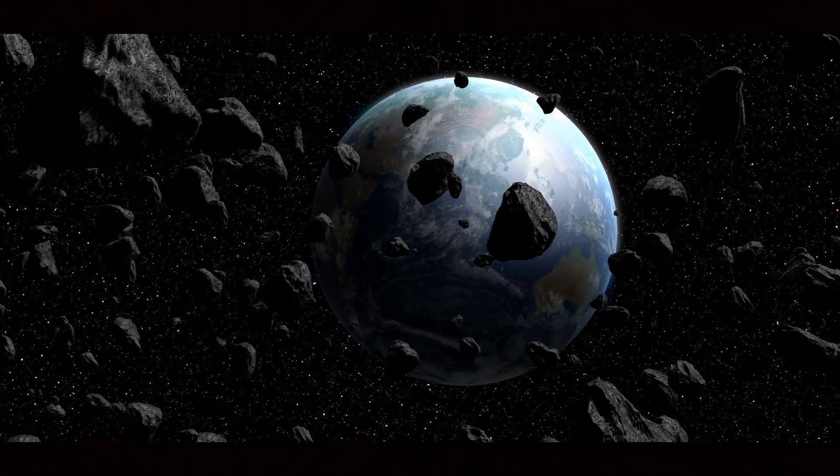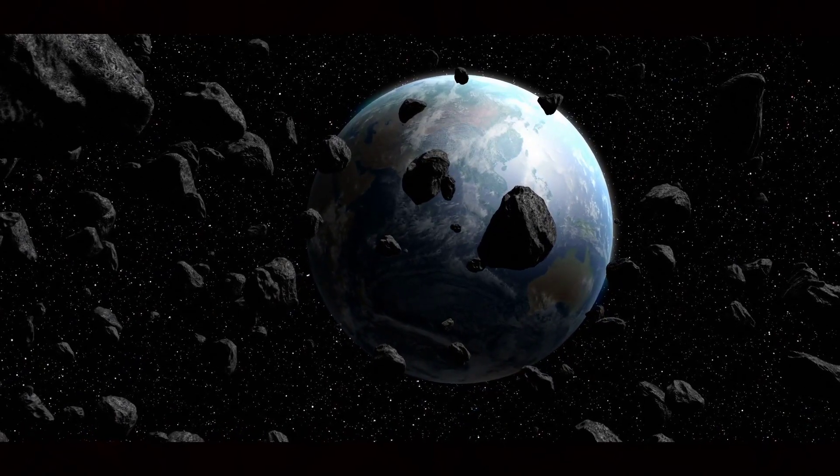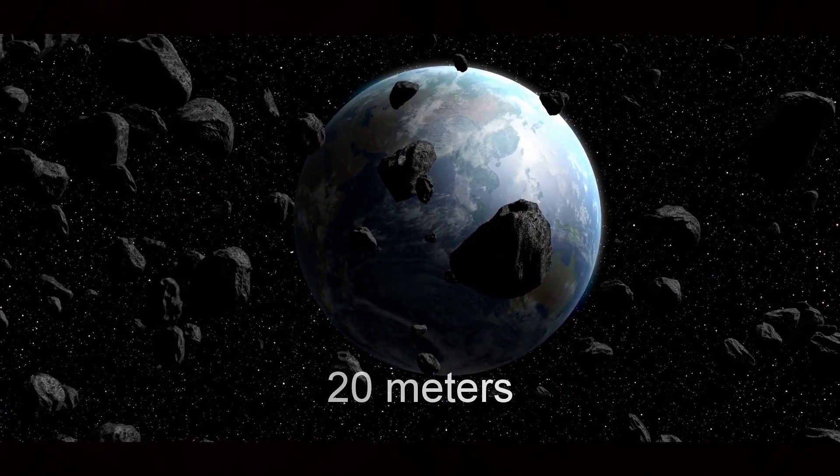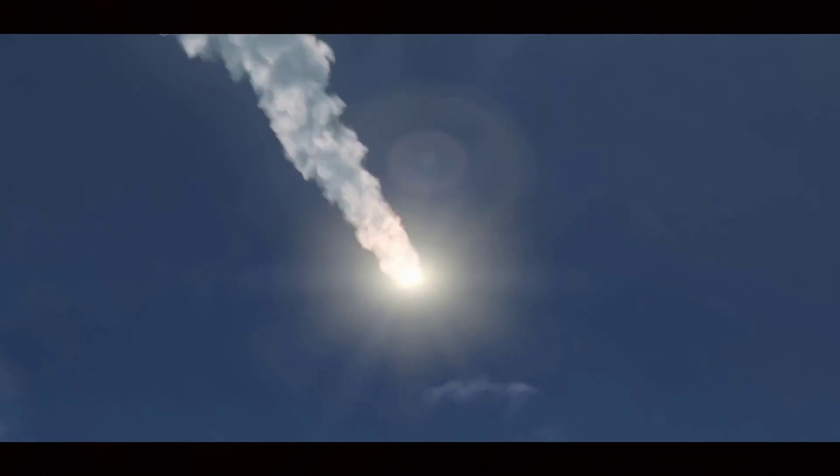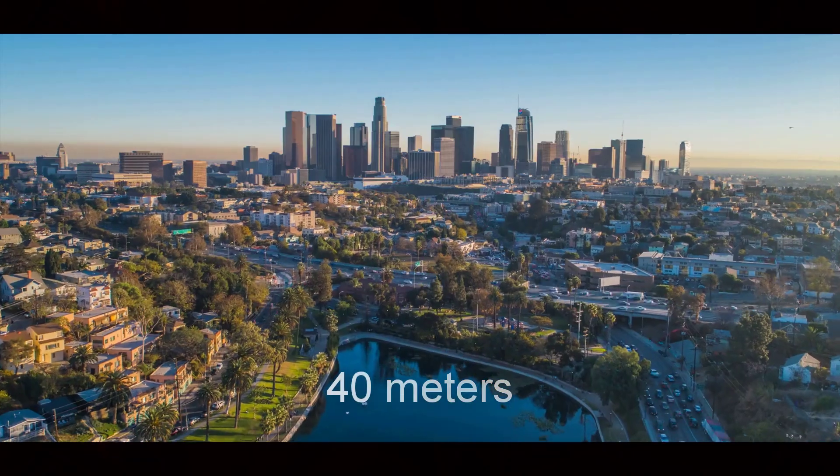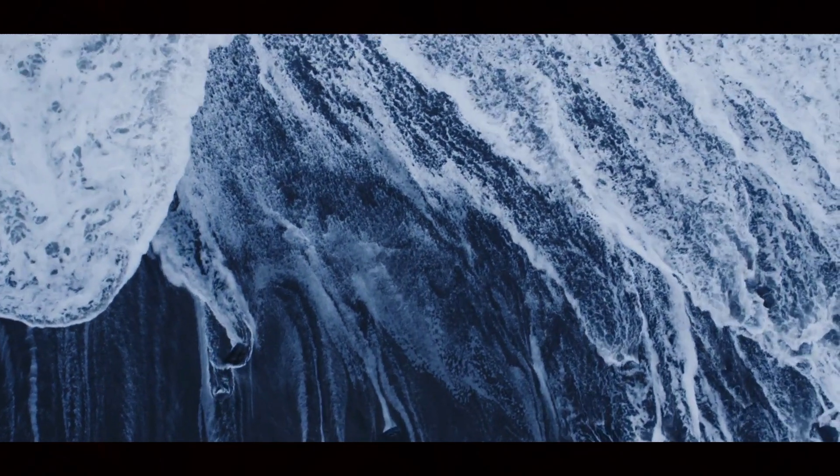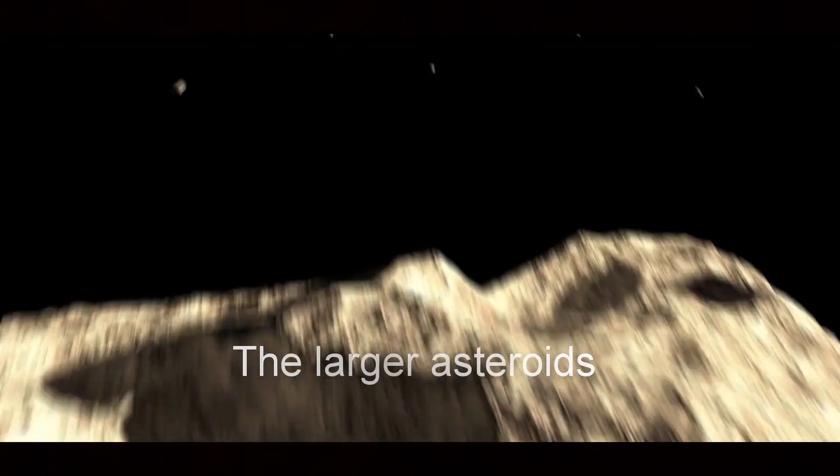Most small asteroids frequently burn up in the atmosphere and thus do little damage. They're usually few meters across in diameter. Some asteroids with a diameter of around 20 meters have created shock waves that shattered windows. The asteroid that hit Siberia in 1908 had a diameter of around 40 meters. Such an asteroid has the potential to destroy a city or even create a tsunami.